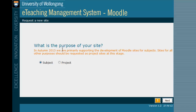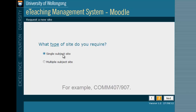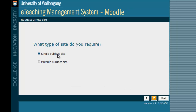First, you will need to indicate that you are requesting your site for a subject. Next, indicate whether you will need a single subject site or a multiple subject site. You'll only need to select multiple subject site if you are teaching a subject where separate subject codes will use the same eLearning space. I'll walk you through the single subject site first and then the multiple subject site process in just a moment.